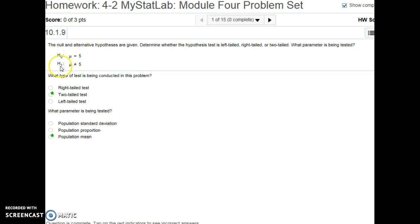And then our alternative hypothesis is an H with a 1 down below. And in this case, our alternative hypothesis is that the mean is not equal to 5. And any time we do it not equal, that's a two-tailed test.